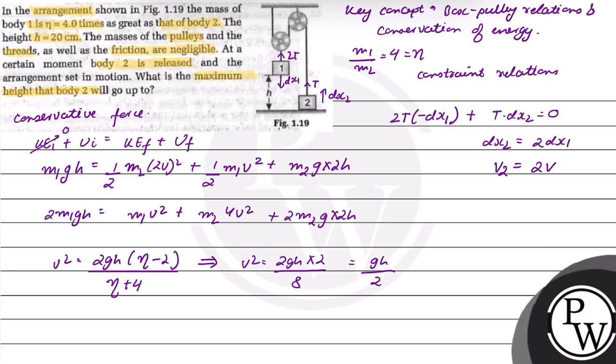So velocity of second particle is 2v, so v₂² = 4v².